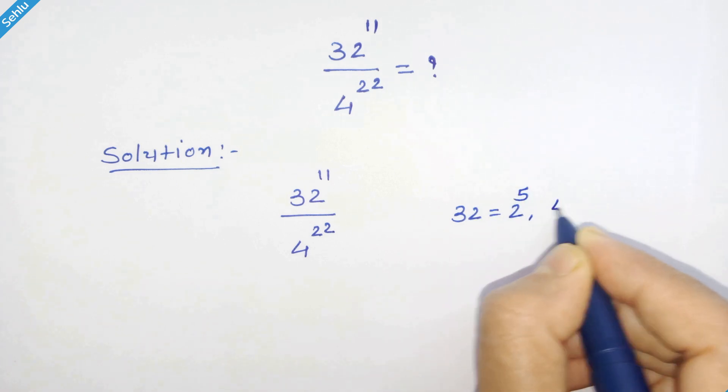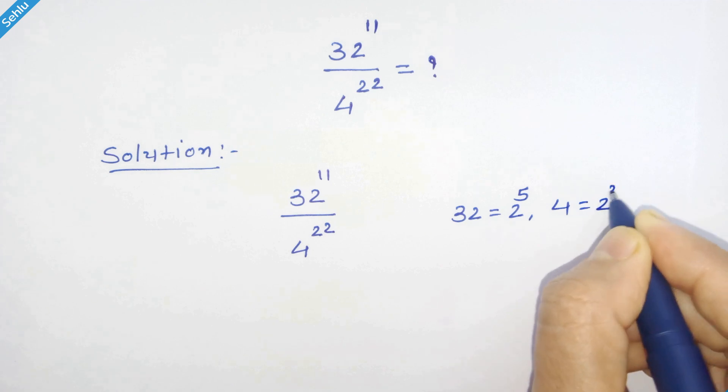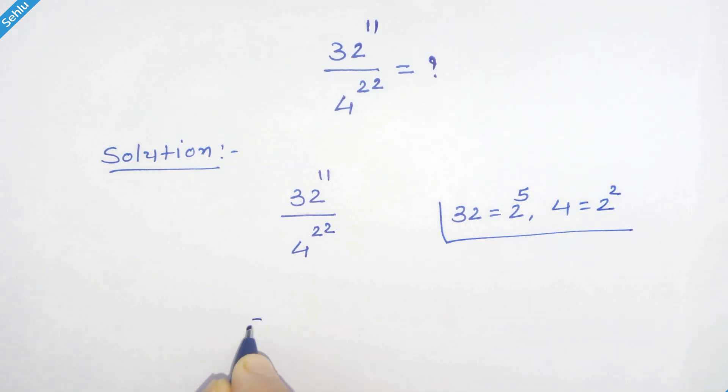raised to 5 and 4 is 2 square, so we will put these values. So we have 2 raised to